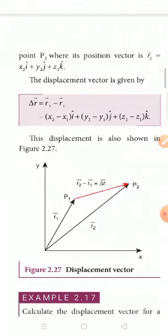Now we write the displacement formula. The displacement vector ΔR = R2 − R1. The particle moves from R1 to R2, so the displacement is R2 minus R1.